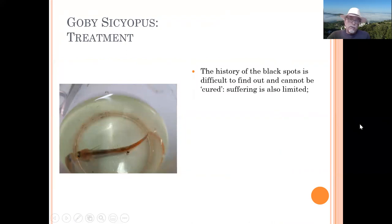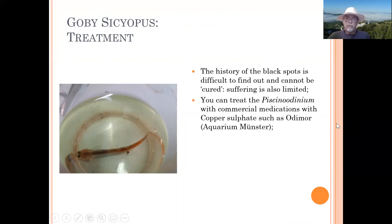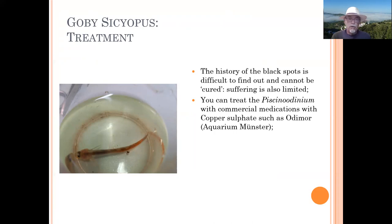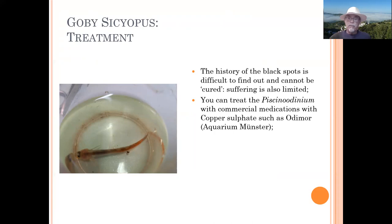This is a parasite which we can easily observe using a microscope. As a treatment, leave the black spots — the suffering from those is limited. It's the Oodinium, the Piscinodinium, that we have to treat because it can spread quickly in your aquarium. You need to use products containing copper sulfate, as copper sulfate is one of the best cures. Watch out if you have invertebrates or shrimp in your tank — in that case you cannot use copper sulfate.